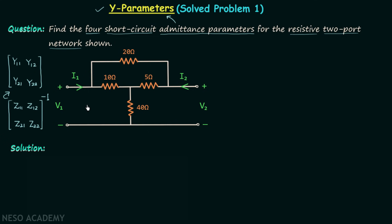We will first calculate the z parameters. Step one is to assign the currents in all the branches of the two port network. Current I1 is entering a node and getting divided into two currents: let's say the current in one branch is I1 prime and the current in the other branch is I1 double prime. Current I2 is entering the next node and I1 double prime is also entering it, so according to KCL the leaving current equals I1 double prime plus I2.